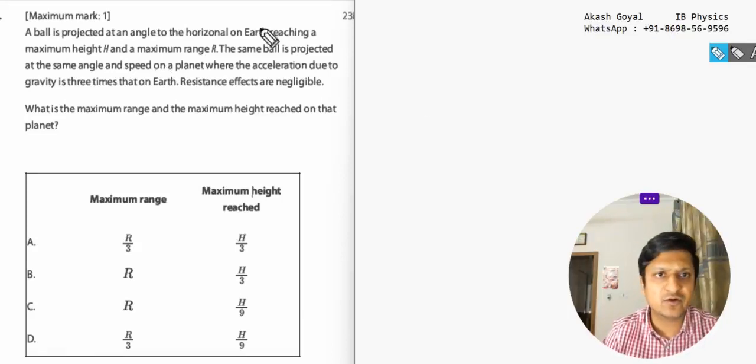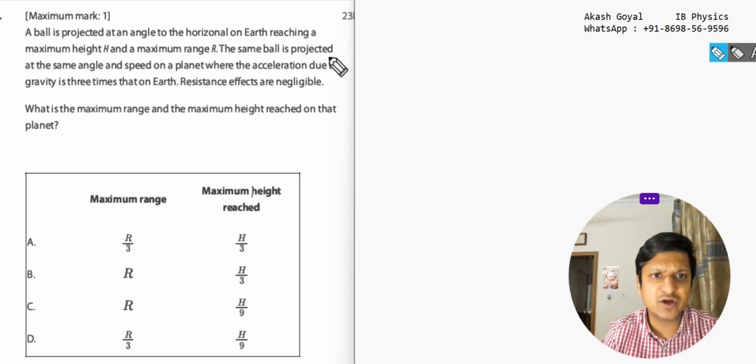Here we have a question about a ball projected at an angle to the horizontal on Earth, reaching a maximum height h and maximum range r. The same ball is projected at the same angle and speed on a planet where acceleration due to gravity is three times that of Earth.